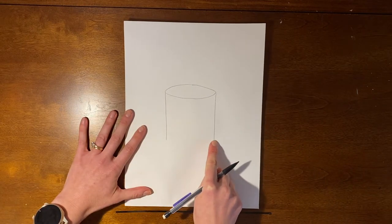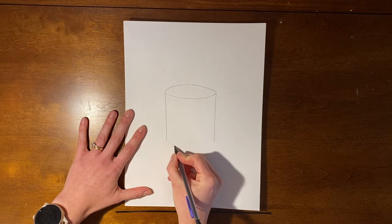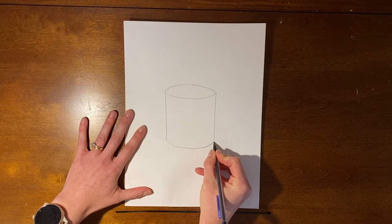Next, we're going to connect those vertical lines with a curve or a smile line. This will make our mug look round.